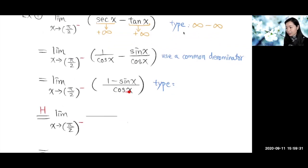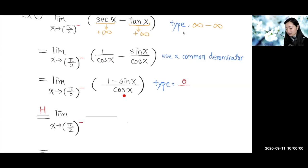Now what type is this? As x approaches π/2 from the left side, sine of x approaches one, so one minus one gives zero on top. The denominator, cosine x, also approaches zero. So this is a zero over zero type — one of the two emergency types — so we send it to the hospital.